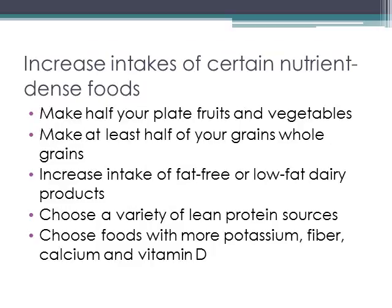To help prevent chronic diseases, there are certain foods we can increase. We want to make half of our plate fruits and vegetables, make at least half of our grains whole grain, increase our intake of fat-free or low-fat dairy products, choose a variety of lean protein sources, and choose foods with more potassium, fiber, calcium, and vitamin D. These four nutrients are often lacking in our diet and have been identified as nutrients of concern by the Dietary Guidelines Committee in 2010.